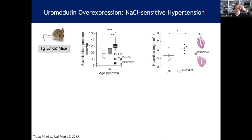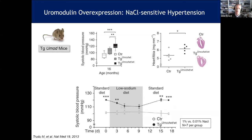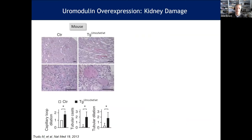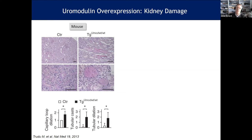Together with Luca Rampoldi in Milan, we modeled this in a mouse, and observed that mice carrying a 1-to-2-fold excess of uromodulin — mimicking the human risk situation — are hypertensive, develop cardiac hypertrophy, and display salt-sensitive hypertension. On standard diet versus low-sodium diet, the transgenic mice show clear salt-sensitive hypertension. Not only did these mice have hypertension, they also had discrete signs of kidney damage accumulating over time, such as casts and tubular dilations. These structural findings were confirmed in human cohorts carrying the risk genotype.